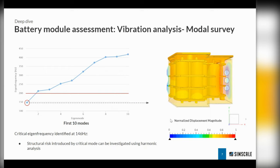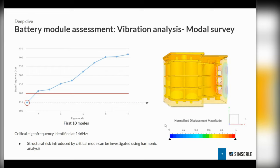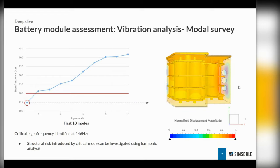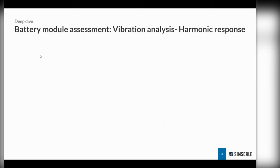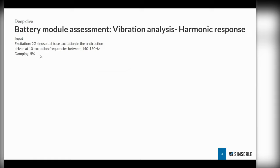What we can do then is move on from modal analysis into a harmonic analysis, where we can run the same scenario but give it a physical shape, just like in the physical test space. We will input an excitation of 2g as a sinusoidal base excitation in the x direction, really trying to excite this mode of interest. We'll drive the excitation at frequencies between 140 and 150 hertz to capture the peak accelerations and peak stresses of the first mode. We're running 10 frequencies around the 146 hertz mode to really capture the peak.